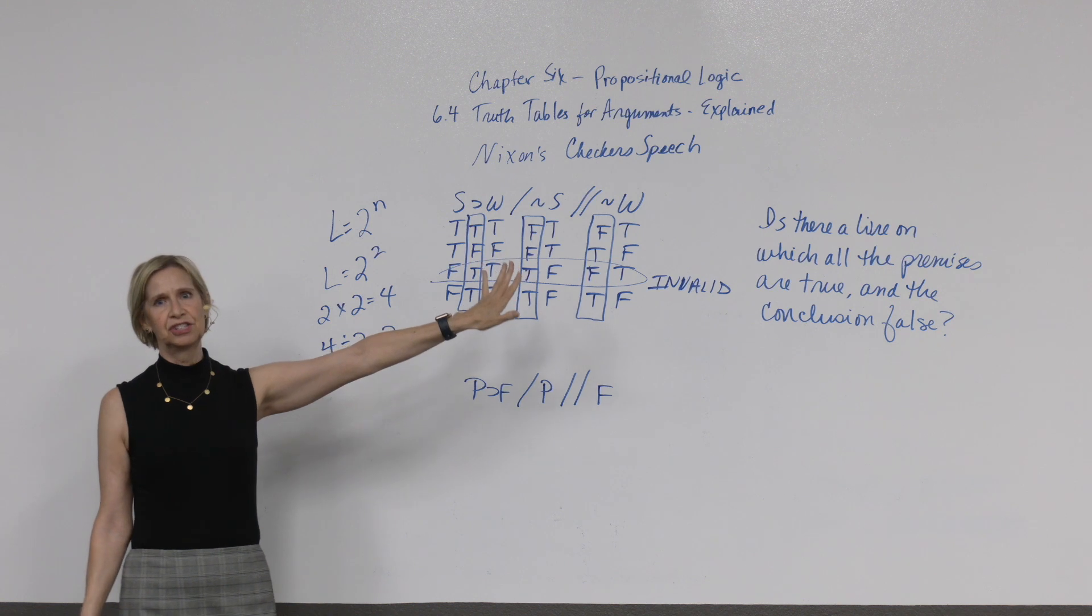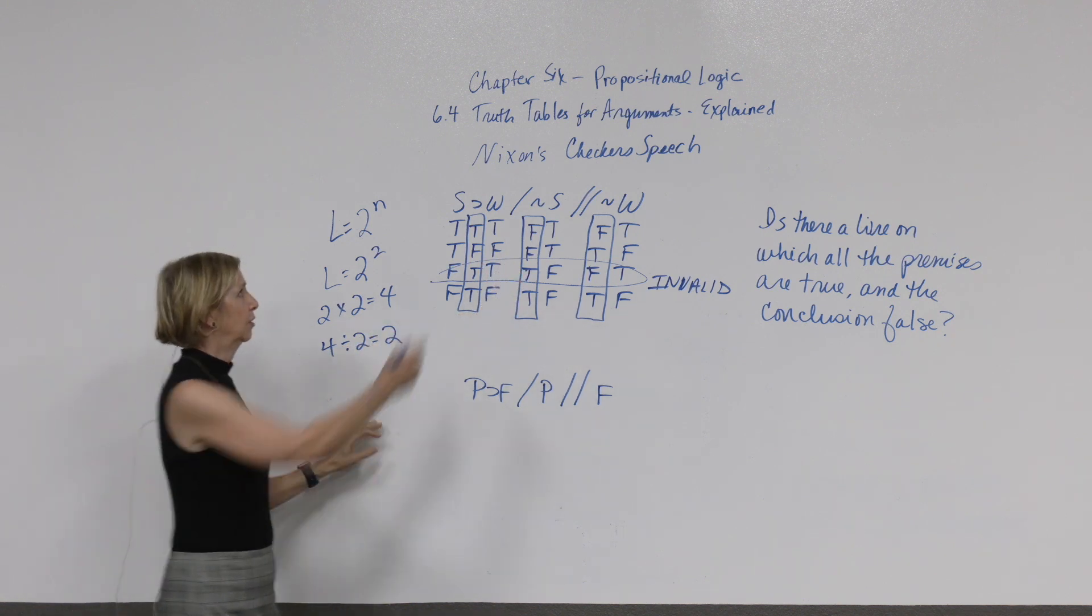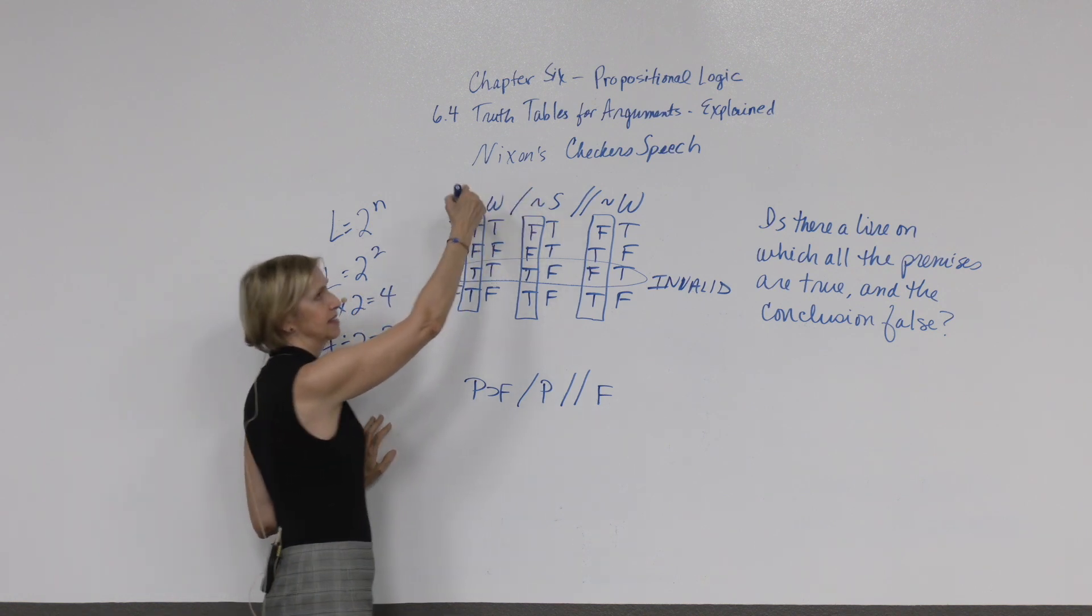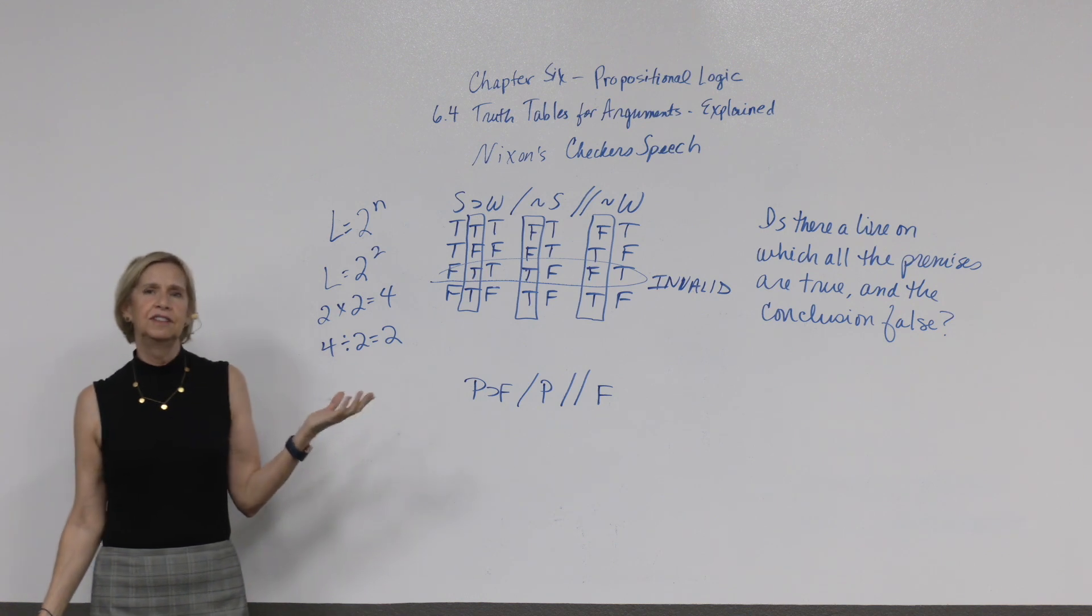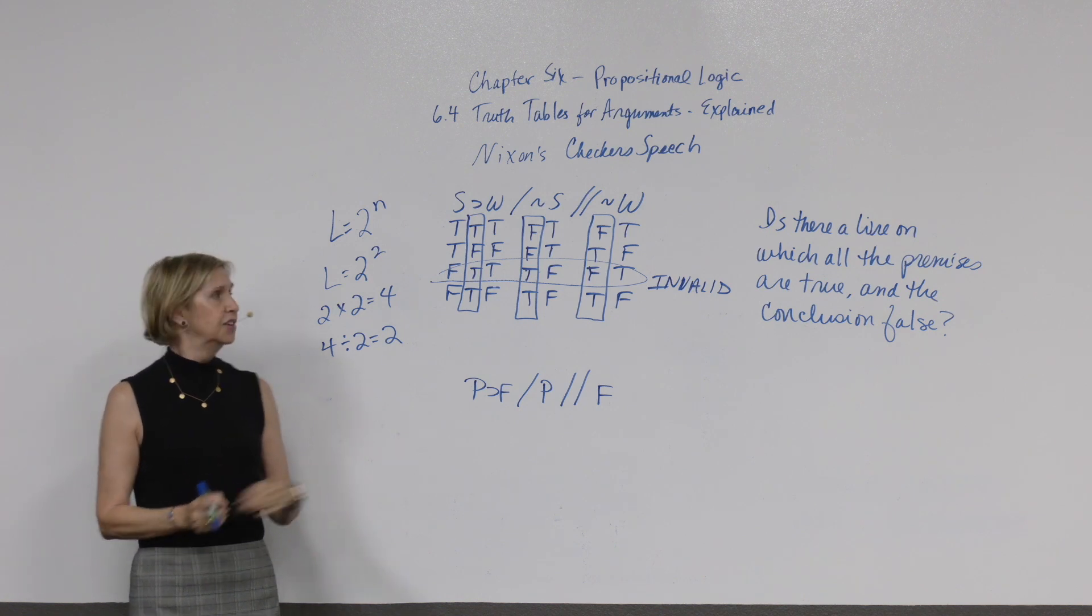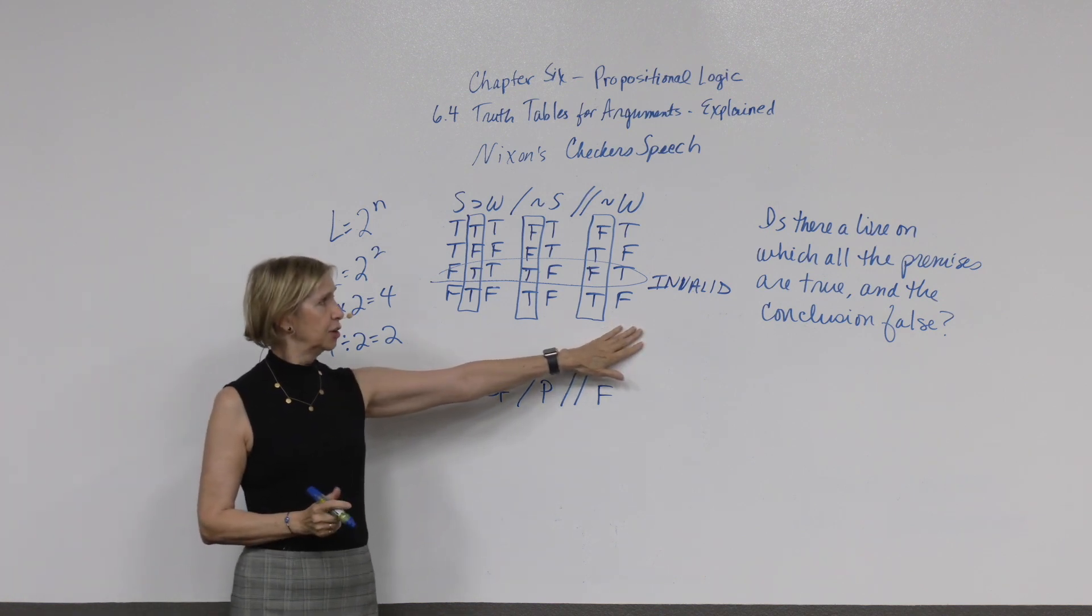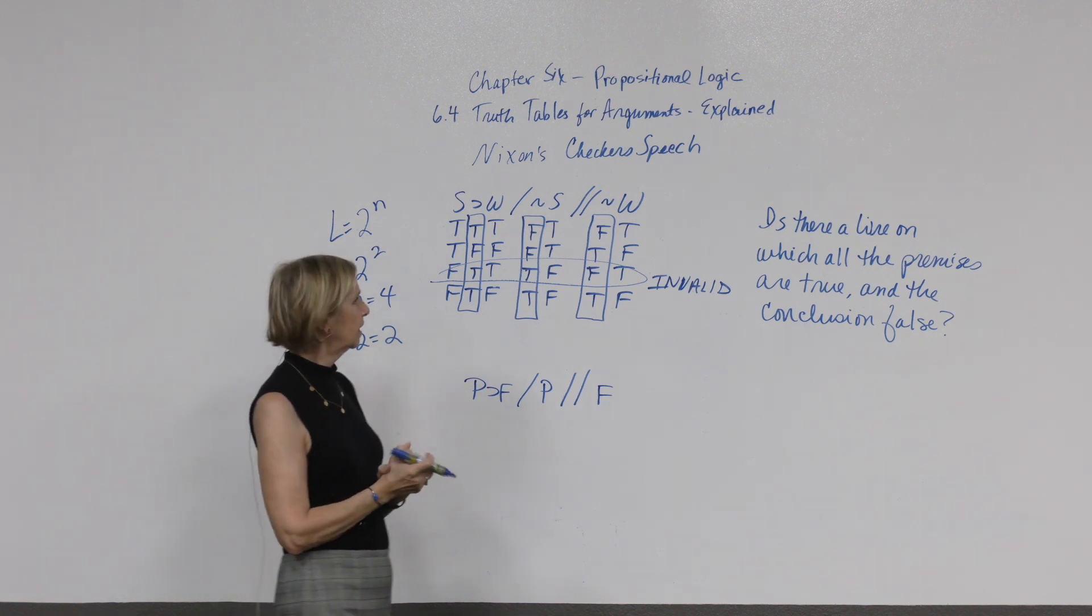This mistake occurs so often, it has a name. It's called the fallacy of denying the antecedent. Remember, this would be the antecedent and the second premise he denies the antecedent and tries to say, well, then I did nothing wrong. But clearly, he could have done many other things wrong. Taking the money in secret is not the only thing that could have been done wrong. So, this is an invalid argument for him called denying the antecedent. It's a common mistake.